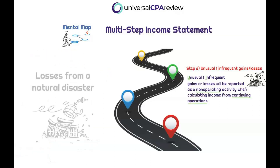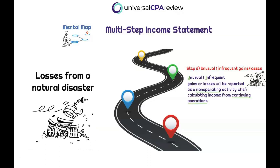For example: a company experiences a loss from a natural disaster. Say the company's inventory is warehoused in Oklahoma and a tornado blows their warehouse away. That loss is considered unusual in nature and infrequent in occurrence — it's not an ordinary loss. So the loss from their inventory or warehouse is going to be reported in the non-operating section. Also keep in mind that an additional disclosure would not be necessary.